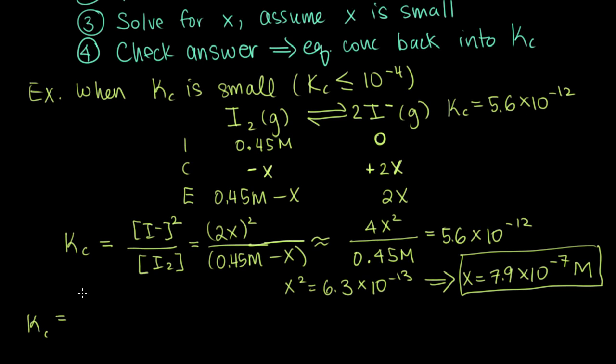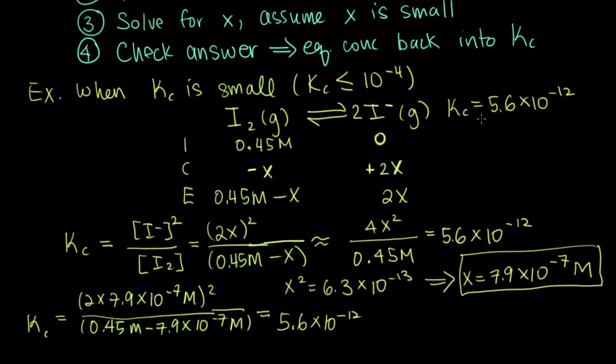Then we get kc is equal to 2 times our x value, 7.9 times 10 to the minus 7 molar, all of this squared divided by 0.45 molar minus our x value, 7.9 times 10 to the minus 7 molar. If you multiply this all out, what you get for kc is 5.6 times 10 to the minus 12. That matches what we had originally in our problem. This tells us that our approximation was pretty good. It gave us an x value that gave us concentrations that make sense. And it tells us that we didn't make any silly math errors, which is really easy to do in this kind of problem.